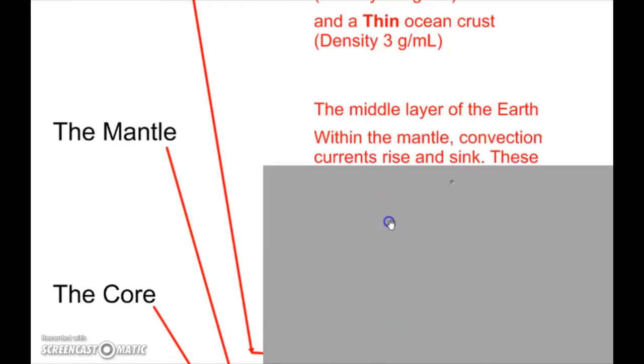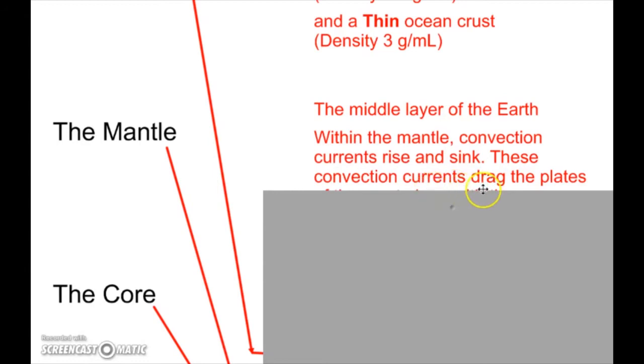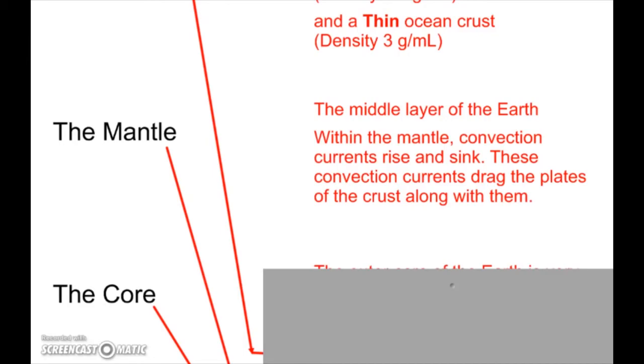The mantle is the middle layer of the Earth. Within the mantle, convection currents rise and sink. We're going to come back to these quite a lot. These convection currents drag the plates of crust along with them. I can show you what this looks like if we were able to peel the Earth away a little bit.